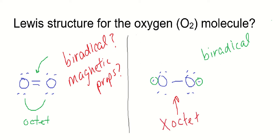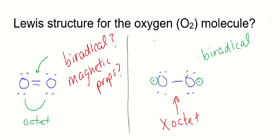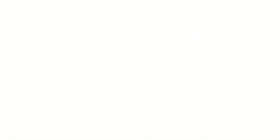So we need a new model. We turn to molecular orbital theory, or MO theory for short. This is taken from chemleebraytext.org — just copied it from there.